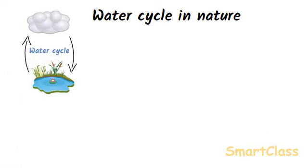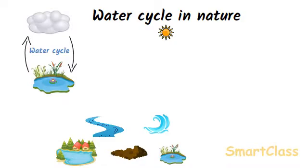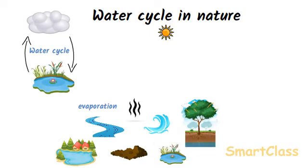Let us now understand the water cycle. Water is present on the earth in rivers, lakes, ponds, oceans and soil. Heat from the sun evaporates water from all these places to form vapours, and this water vapour goes into the air. The plants and trees also lose water by the process of transpiration, and this water vapour also goes into the air.